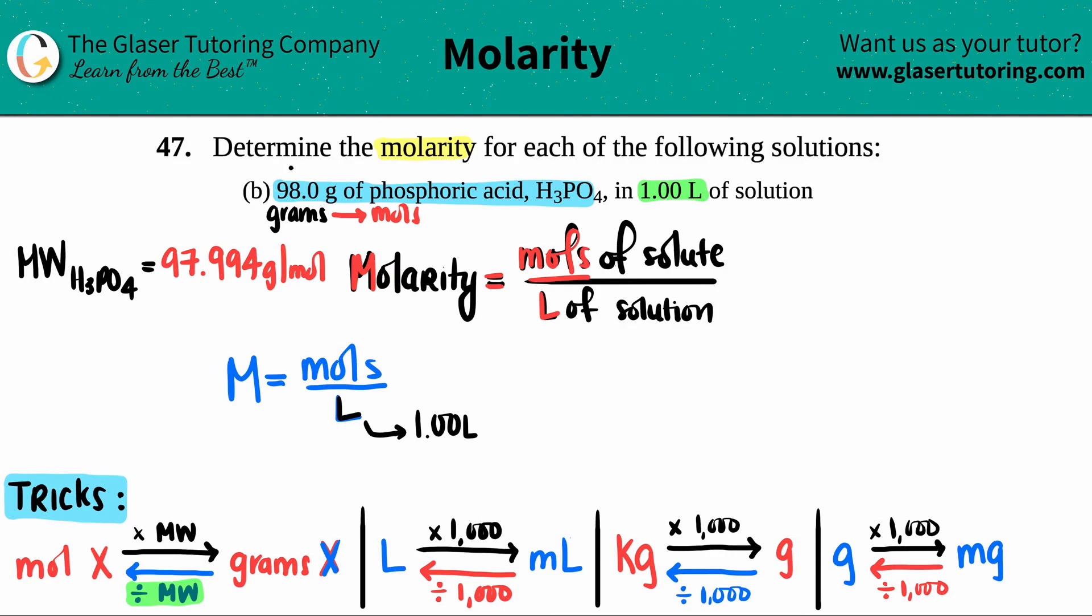To go from grams to moles, you need to divide by the molar mass. I'm going to take the weight that I have, 98.0 grams, and divide it by the molecular weight that I found, 97.994. That's going to tell me how many moles I have.